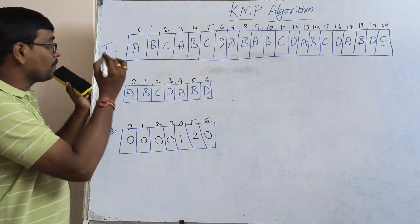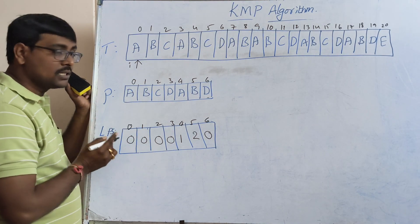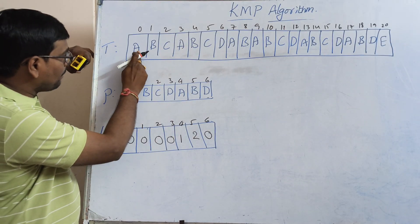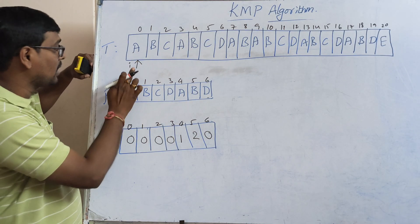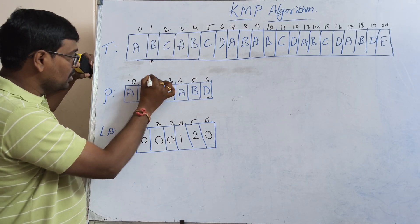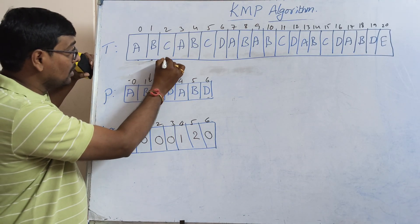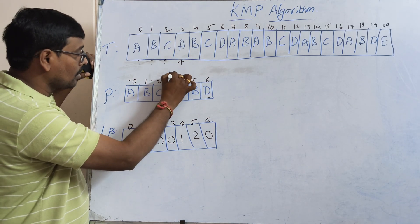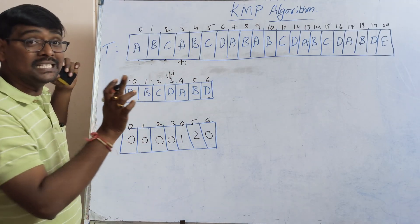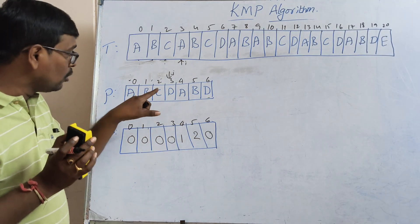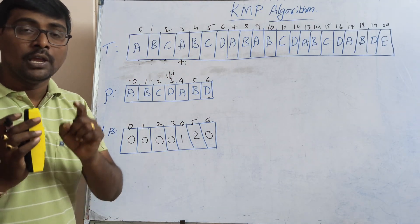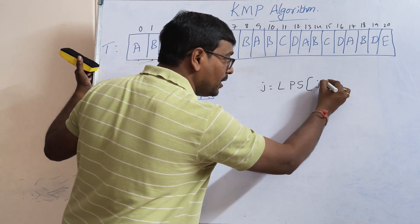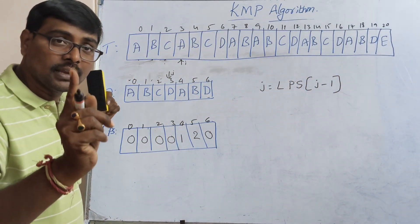For the comparison phase, we use two pointers: one points to the text (i) and another to the pattern (j). Compare the first character — 'a' and 'a' match. Whenever there is a match, move both pointers forward. 'b' and 'b' match, 'c' and 'c' match. Now 'a' (text) and 'd' (pattern) mismatch. Whenever there is a mismatch and j is greater than zero, j is updated to lps[j-1].